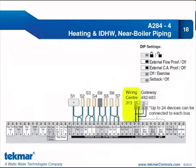The wiring center 313 is connected to boiler bus B — we have four bus terminals on the 284 and could have connected the 313 to any of them. The gateway 482/483 is connected to the same bus because for point-to-point communication, the gateway must be tied to the same bus as the thermostats. Because we have four buses and can connect up to 24 devices on each, that means up to 96 devices total, allowing for large commercial systems. Note that it is boiler bus only — we cannot accommodate any mixed buses on the 284.